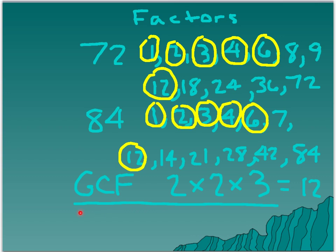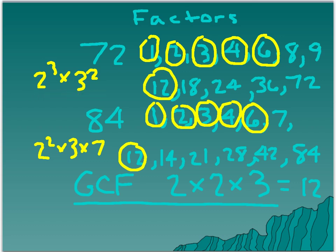Would it have been easier to find the GCF using 2 times 2 times 3 from the prime factorization? I think so. That there is prime factorization for you. The prime factorization for 84 shows what they have in common is 2 squared, plus one more 3. So 2 times 2 times 3 gives us the greatest common factor of 12.